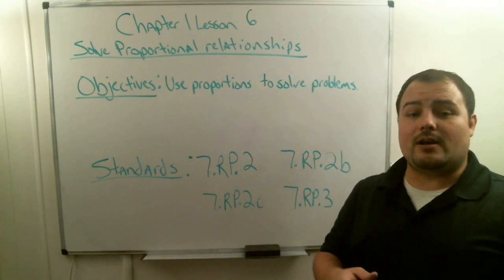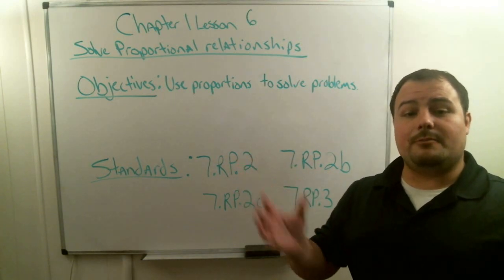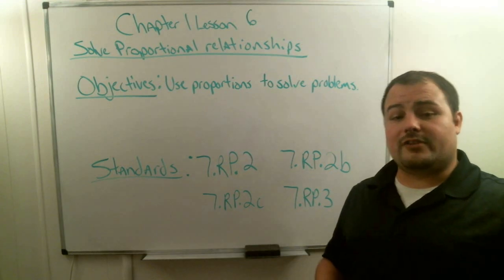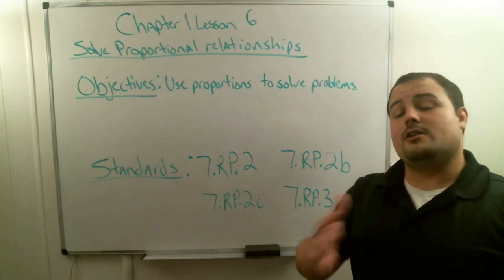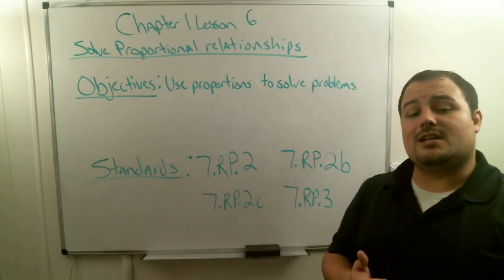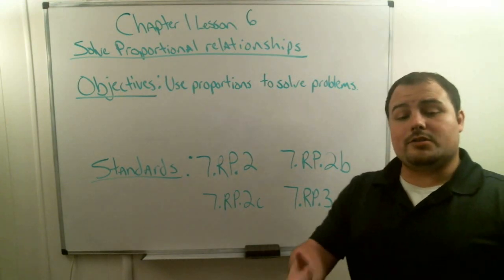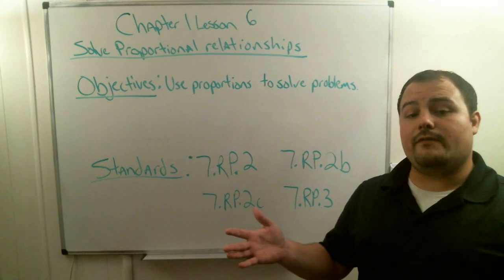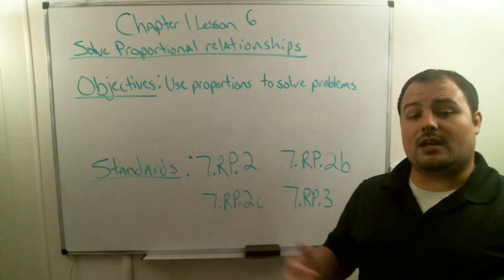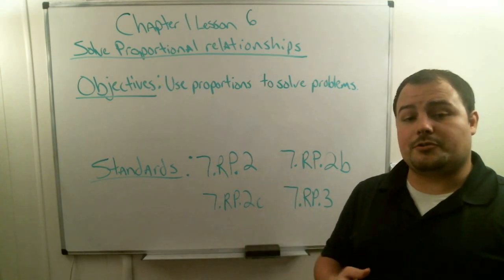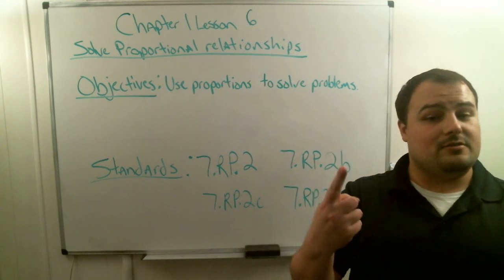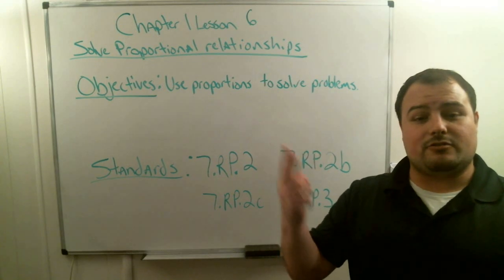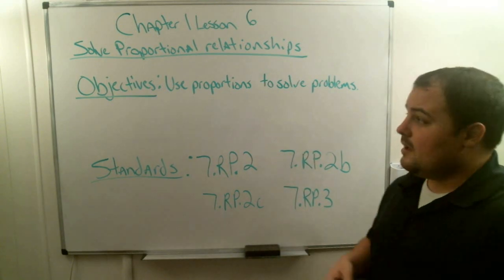We've already talked about how to look at a table and tell if they're proportional by taking the numerator, divide by the denominator, and checking those decimals. We also talked about how to graph something and tell if it's proportional. Remember, it has to do two things: it has to go through the origin, and it has to make a straight line.